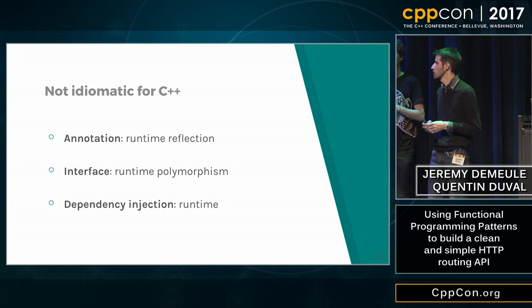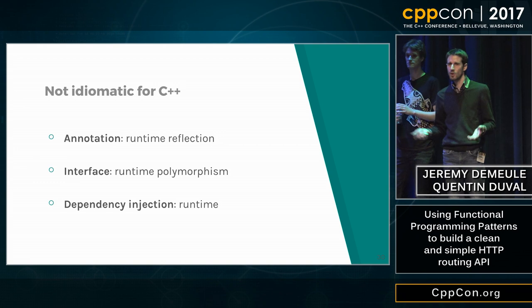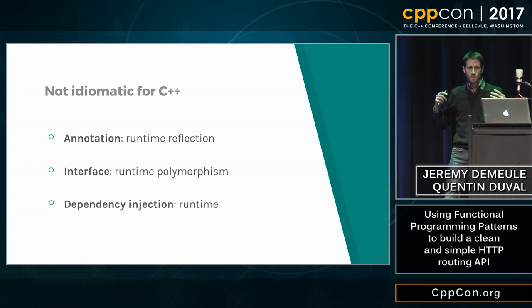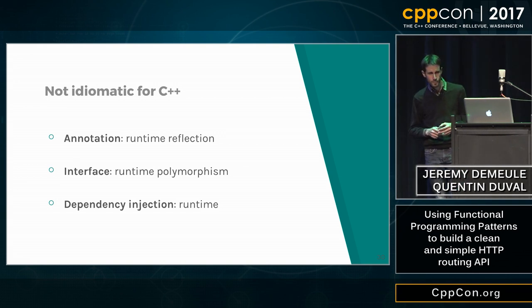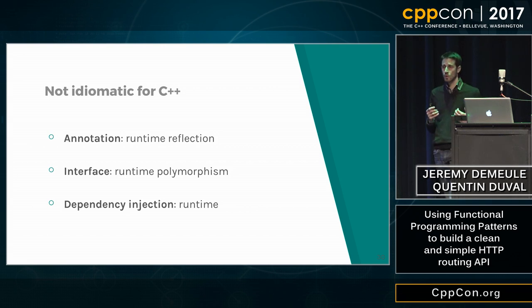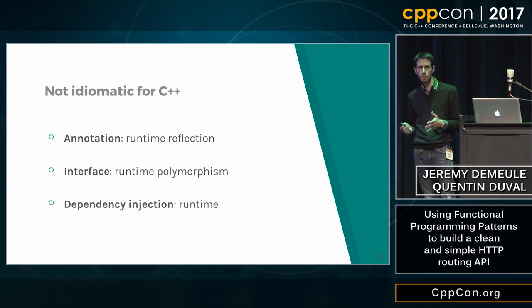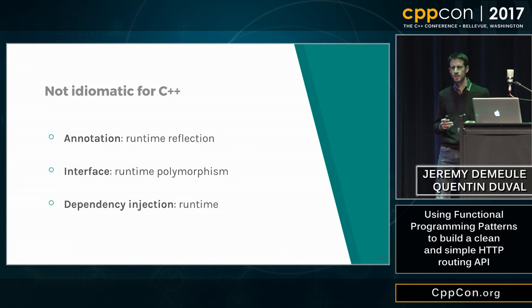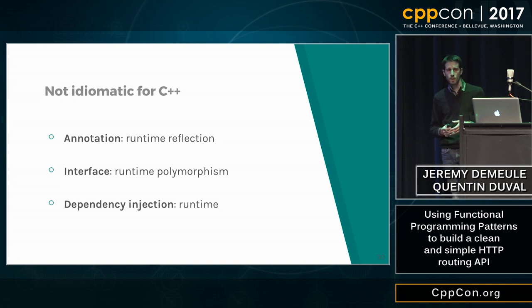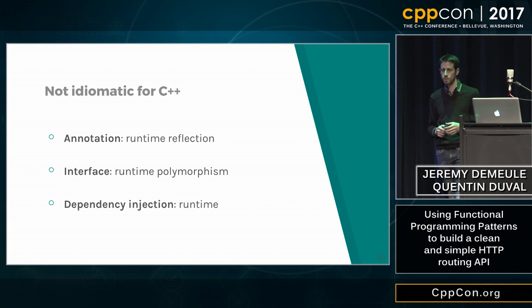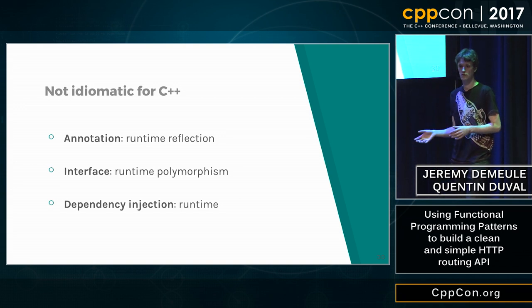This code doesn't feel very C++ like. We use annotations, so a lot of runtime reflection. This is doable, but only with some tooling and code generation, so it's fragile and not very natural. We use interfaces, so runtime polymorphism. We use it in C++, but we also like to pay for what we use — making these kinds of things mandatory for every external dependency is not natural either. And finally, we use dependency injection, so we know the code is correct only at runtime. This is a very trial-and-error process, and it does not feel very C++ — we like to rely on our compiler.